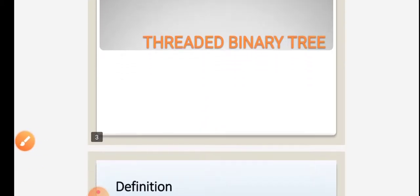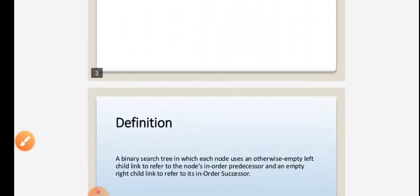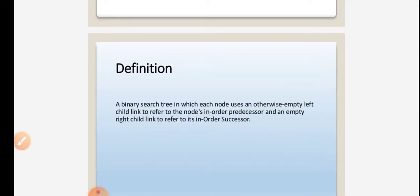Threaded Binary Tree is a part of tree. It is a threaded binary search tree in which each node uses an otherwise empty left child link to refer to the node's in-order predecessor, and an empty right child link to refer to its in-order successor.